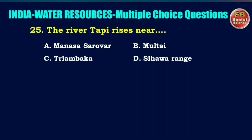The river Tapi rises near — options are Manasa Sarovar, Multai, Triambaka, or Sihavar Range. The right answer is option B: Multai.